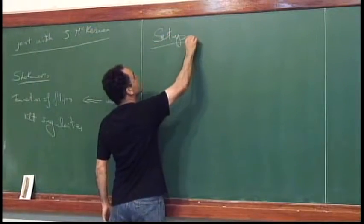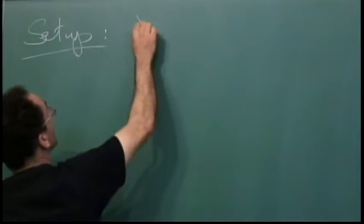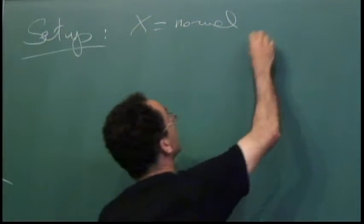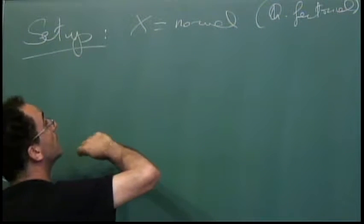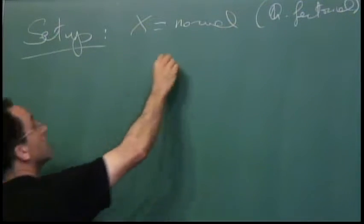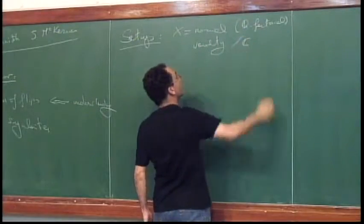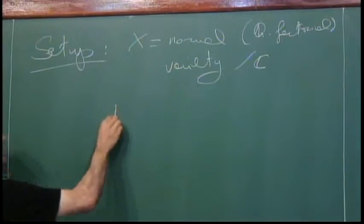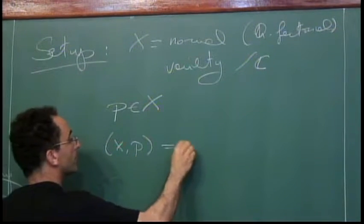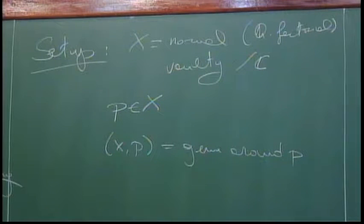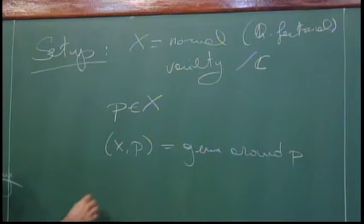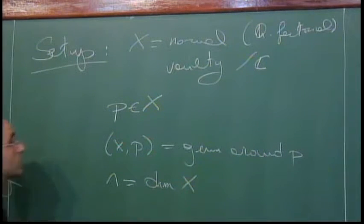I'll work in a different setup compared to this morning. This morning we worked with the projective setting; now we do the opposite — I'm going to work locally around a point. So in all this talk, X will always be normal and Q-factorial, defined over the complex numbers. We fix a point P in X and always work on the germ around P. We work in an analytic category rather than algebraic — it's not even quasi-projective, just locally around P. I'll always assume n is the dimension of X, and I'm mostly interested in the cases n equals two and three.